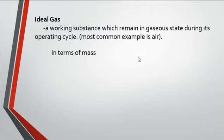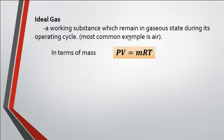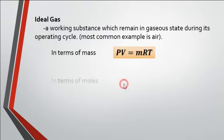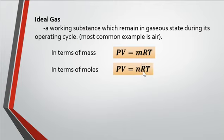The properties of an ideal gas can be described by means of the ideal gas equation of state. In terms of mass, we have absolute pressure times volume equals the mass of the substance multiplied by its ideal gas constant and its absolute temperature (PV = mRT). In terms of moles, we have pressure times volume equals the number of moles times the universal gas constant times absolute temperature (PV = NR̄T).